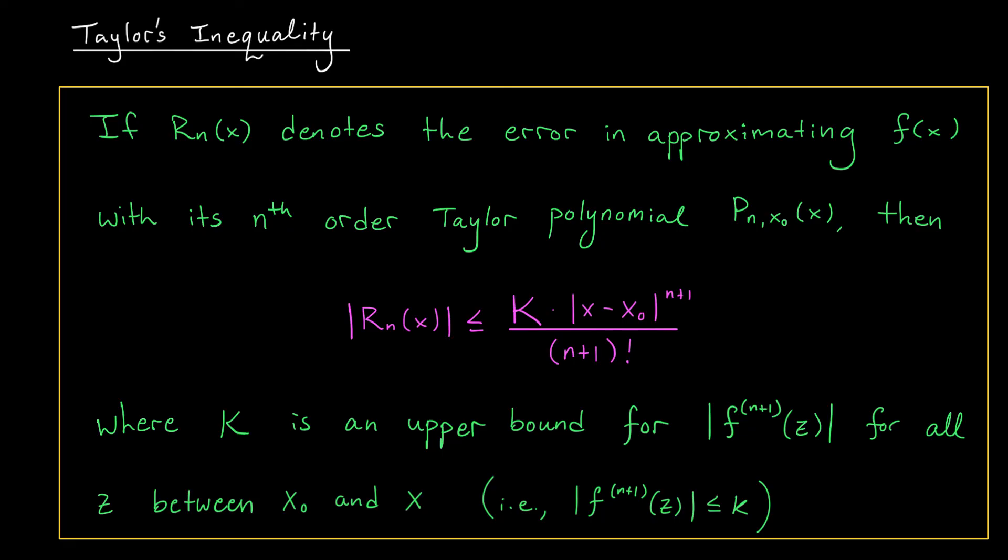Here, k is exactly as it was on the previous slide. It's an upper bound for the absolute value of our (n+1)st derivative at points between x0 and x. To see how we can use this result in practice, check out my example video to follow.